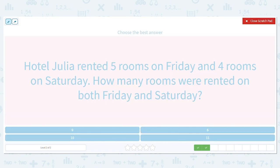Okay. So how many rooms were rented on Friday? And how many on Saturday? And what do we want to know? How many rooms on both days? So we know we're adding. What are we adding? Five plus four equals.